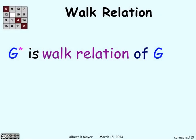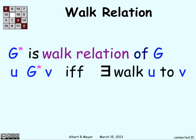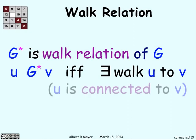Now, let's define another relation. G* is just called the walk relation of G. Basically, G* applies from u to v if there is a walk from u to v, no matter how long it is. If you can find some way to get from u to v, then it applies.